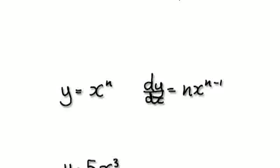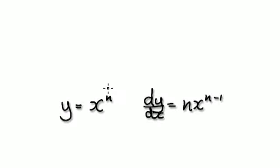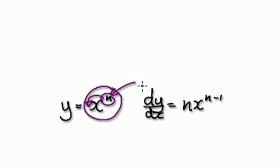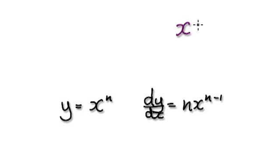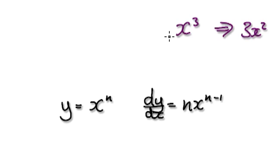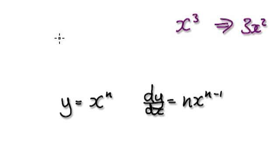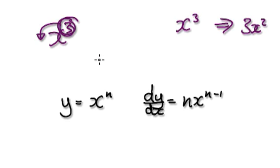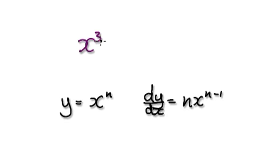In some of the earlier videos I've shown you that when you want to differentiate x to the power of n, you simply take the n down and then get n minus 1. That will give you this. So for example, if you want to differentiate x to the power of 3, that would become 3x squared. So differentiating x to the power of 3 is quite easy.